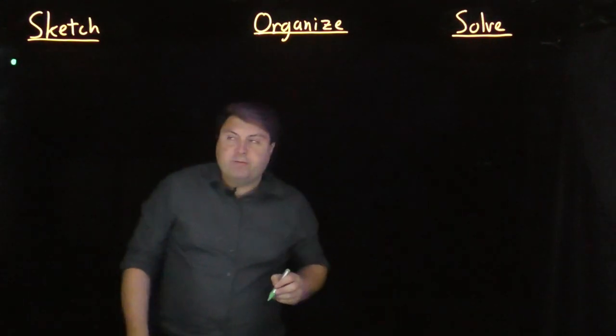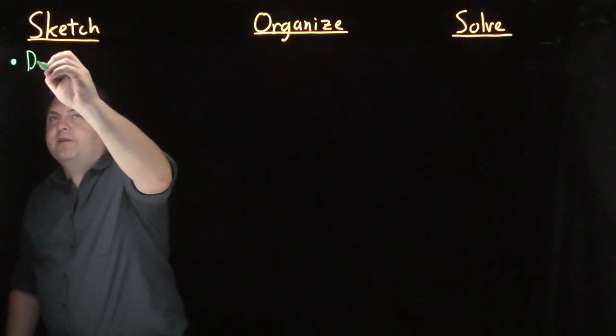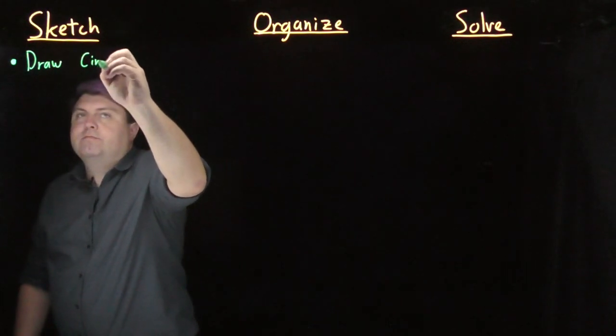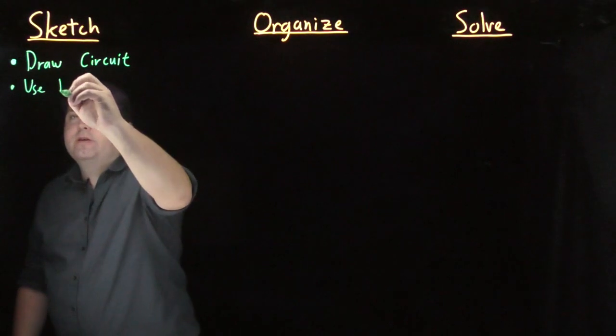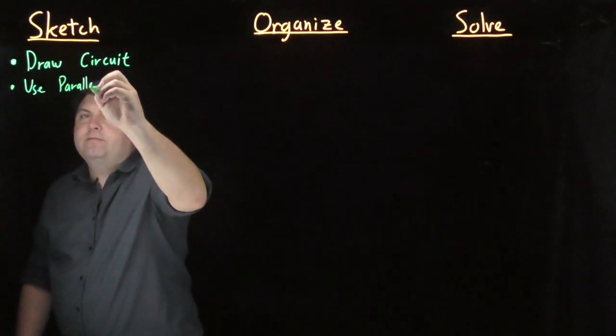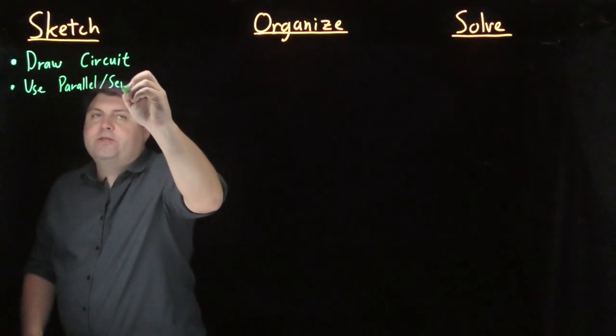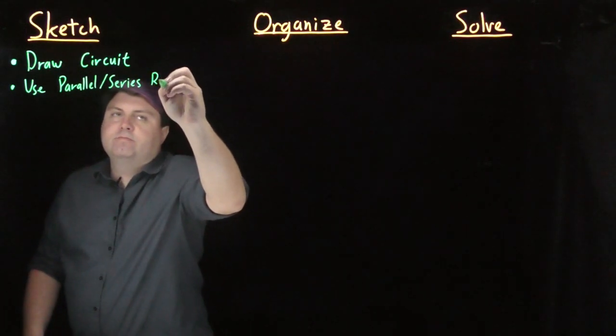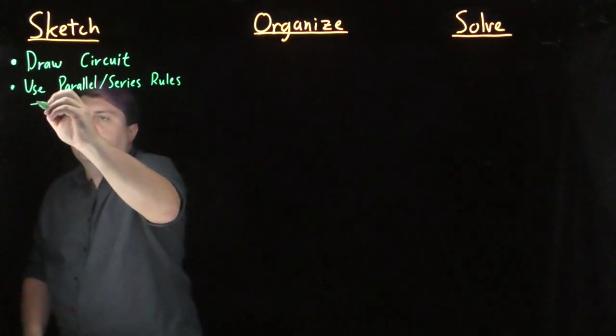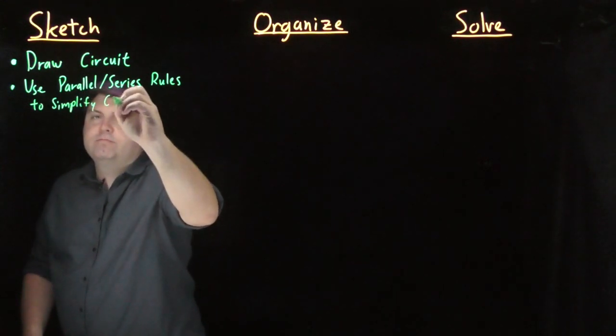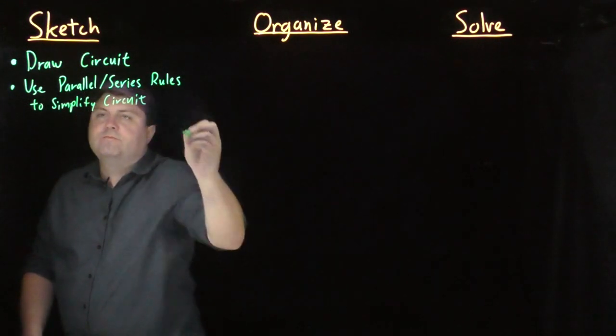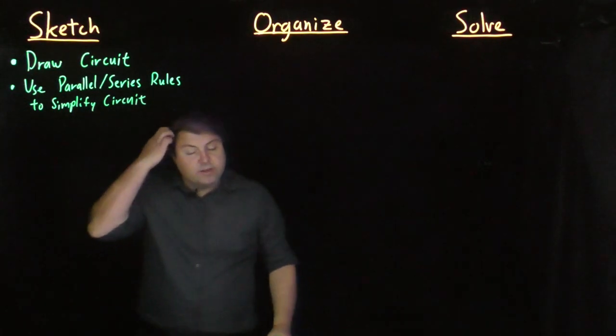So in our sketch step we want to start out by drawing our circuit. And then we want to use any parallel or series rules to simplify our circuit, just in case this is possible.